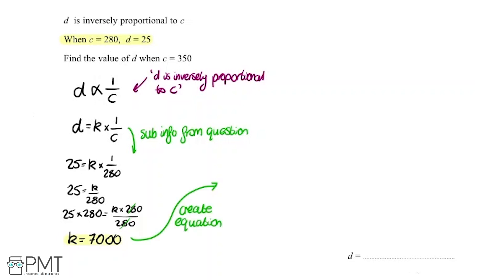Now we're going to use this to create a general equation linking C and D. Because we now know what K is and we know up here that D equals K multiplied by 1 over C, we can say we've got D equals, I'm going to write it like this, K so 7,000 over C. So now we've created a link between C and D using our constant of proportionality.